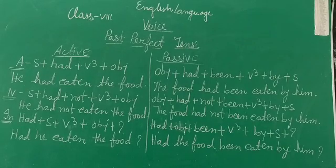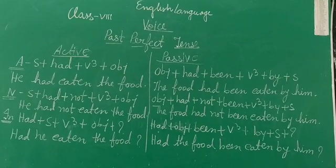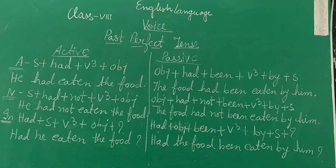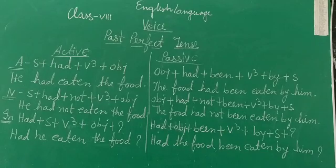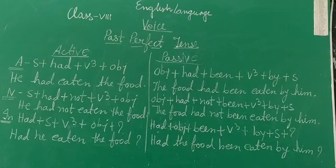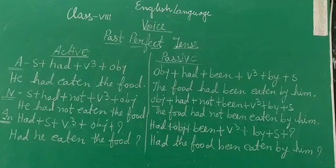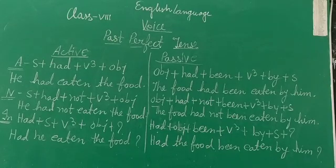In the passive form, had also comes at the first place plus object plus been plus V3 plus by plus subject plus question mark. Like: had the food been eaten by him? Thank you.